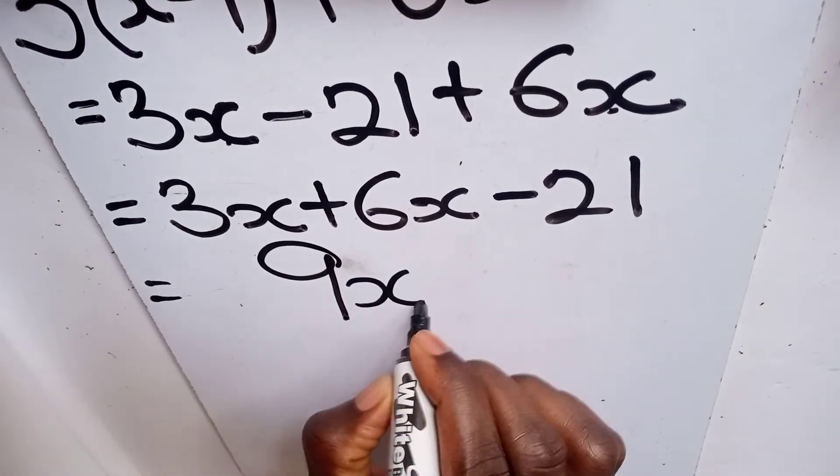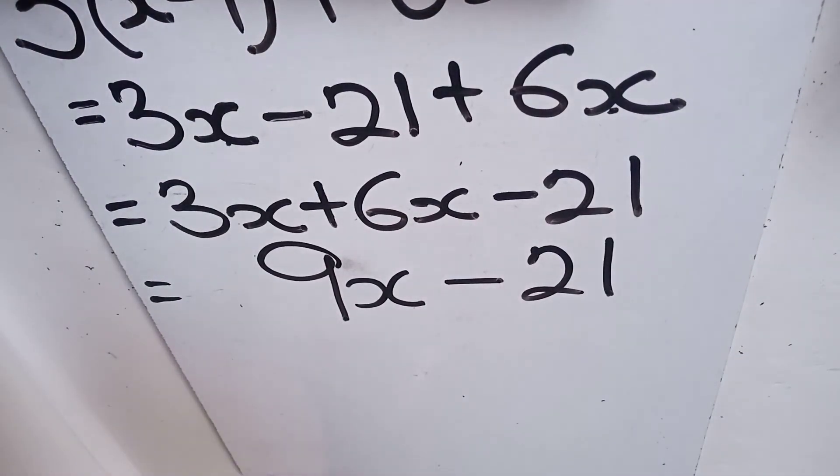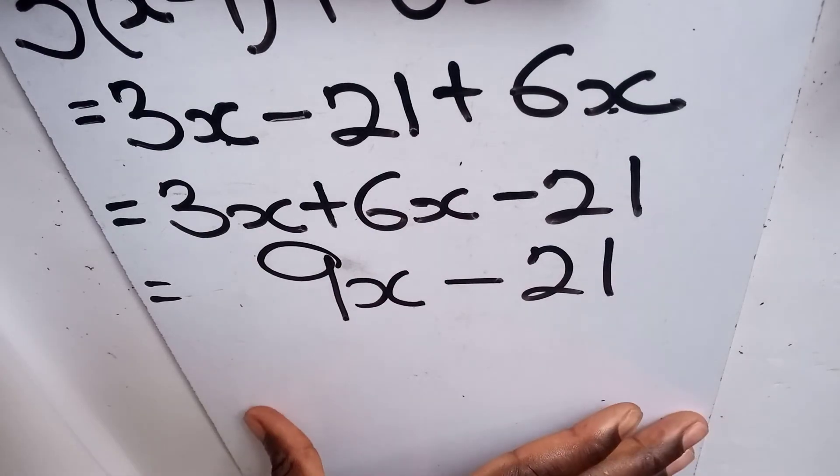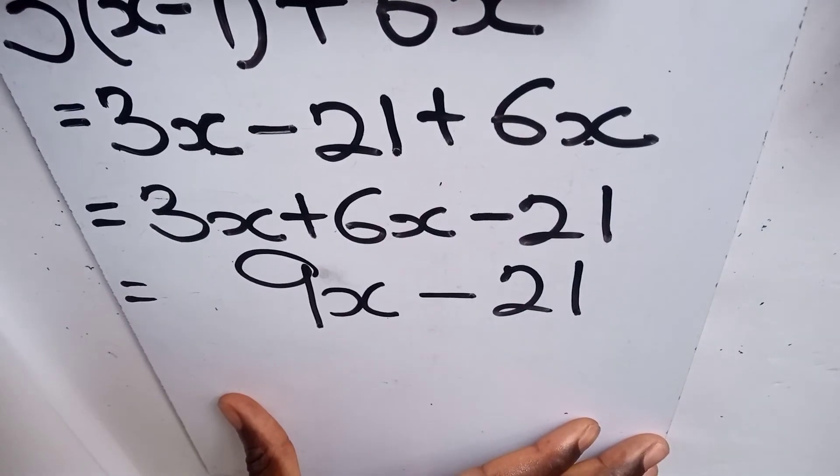Then we have our negative 21 as the constant number here. So this becomes the simplified form of the given expression 3(x - 7) + 6x. Our final answer is 9x - 21.